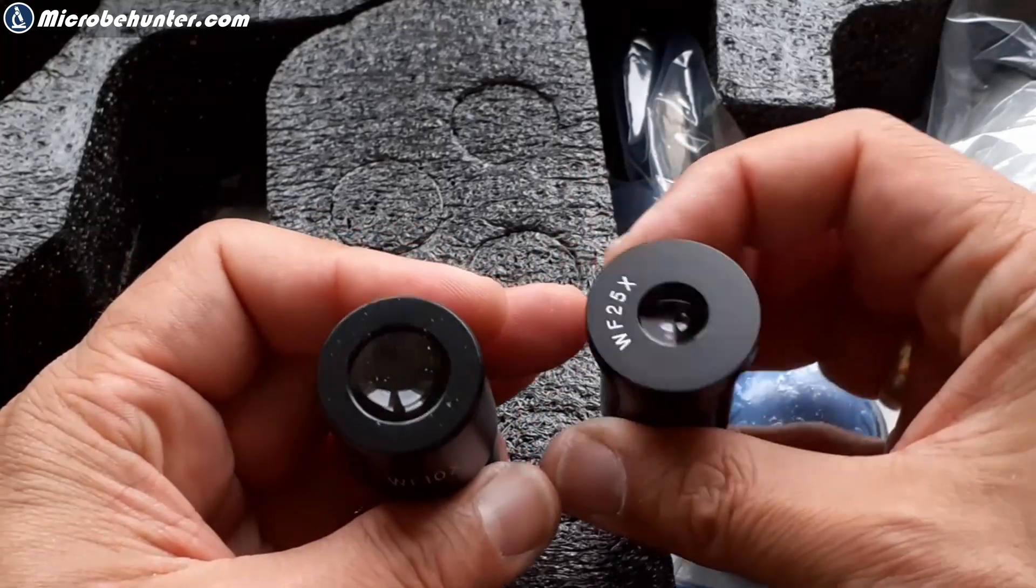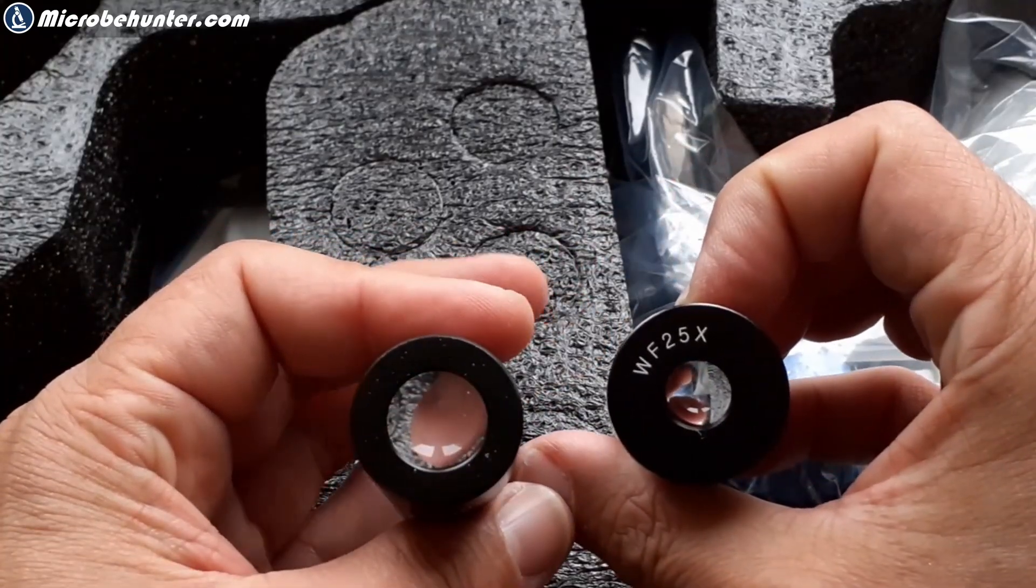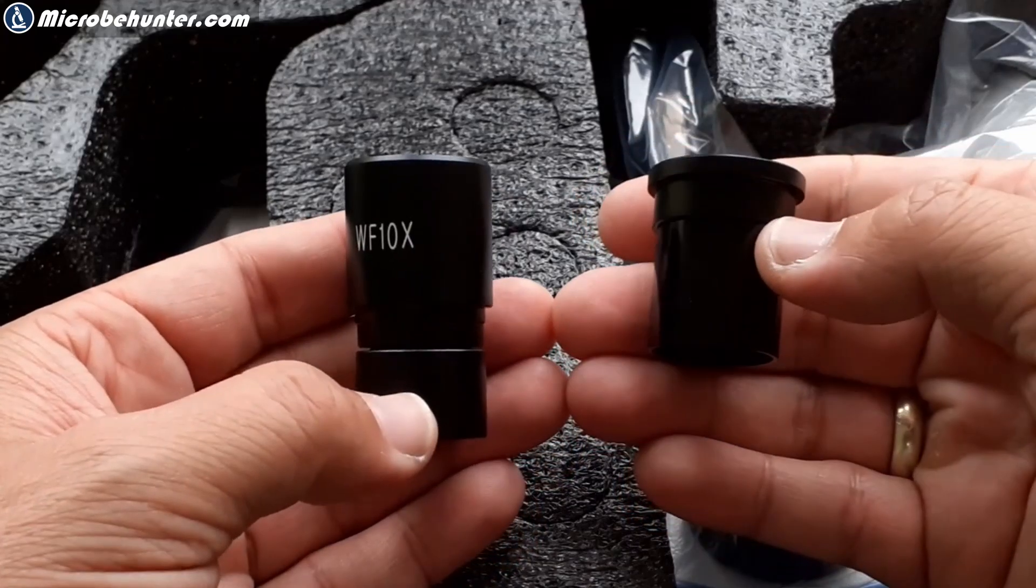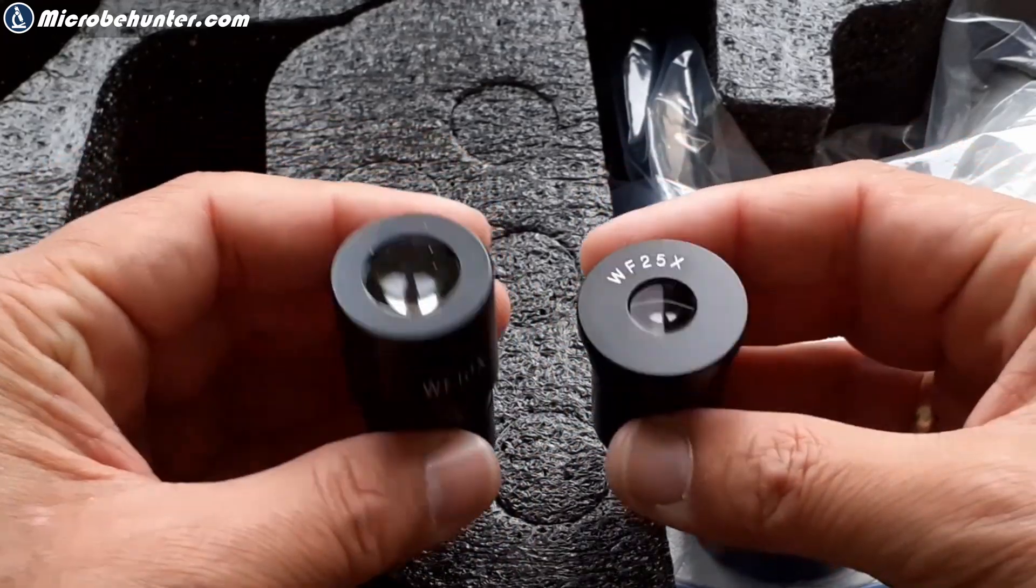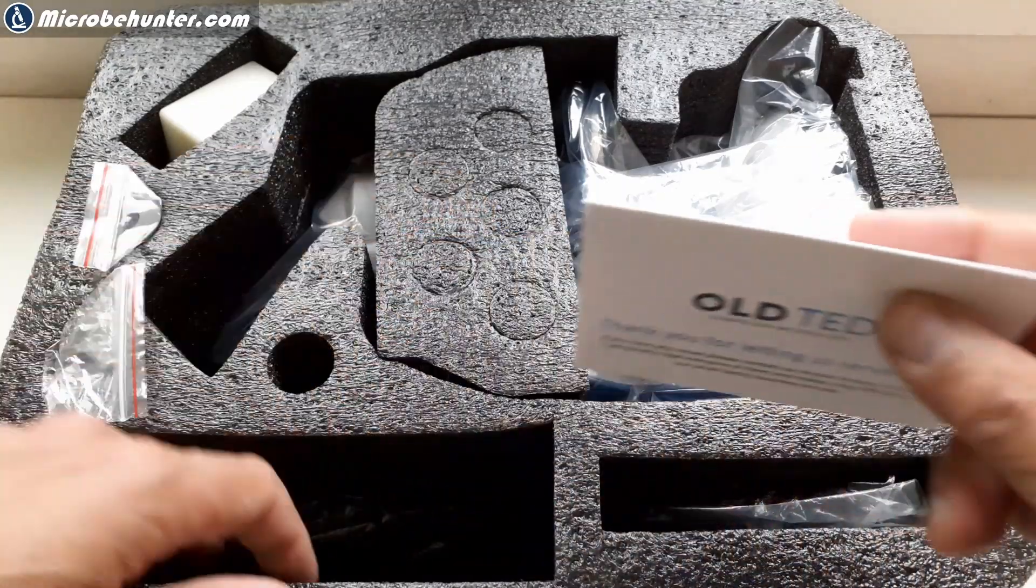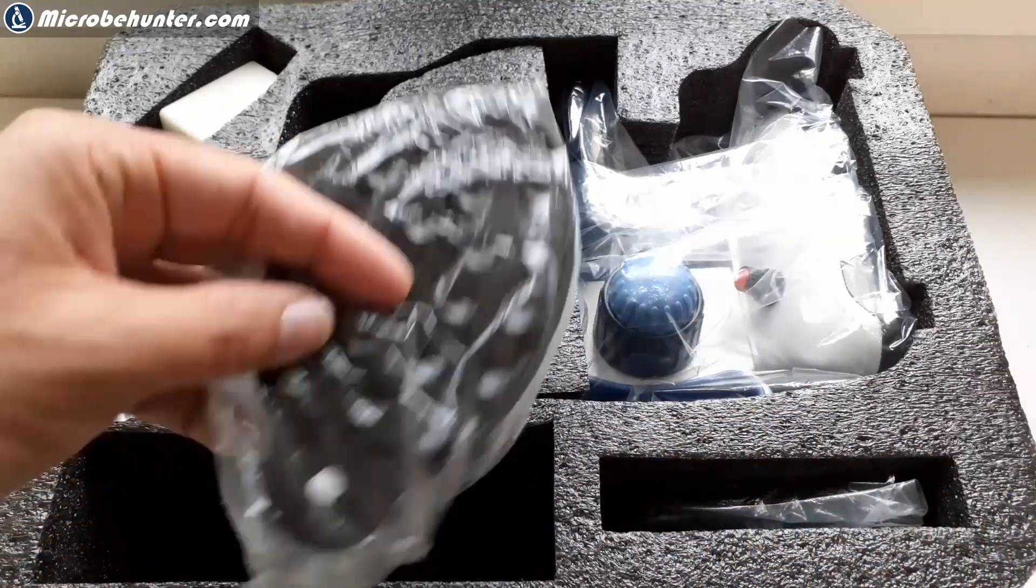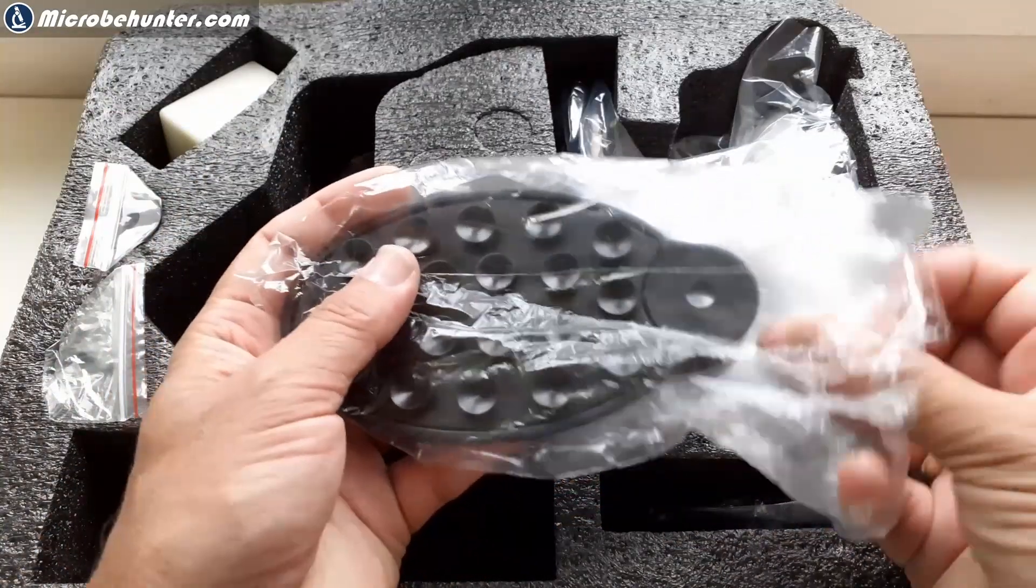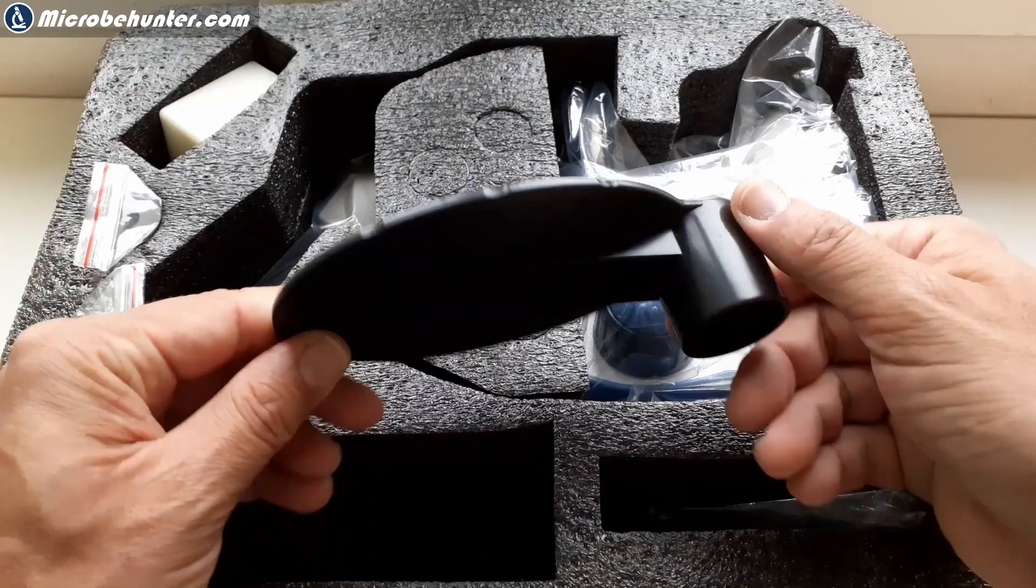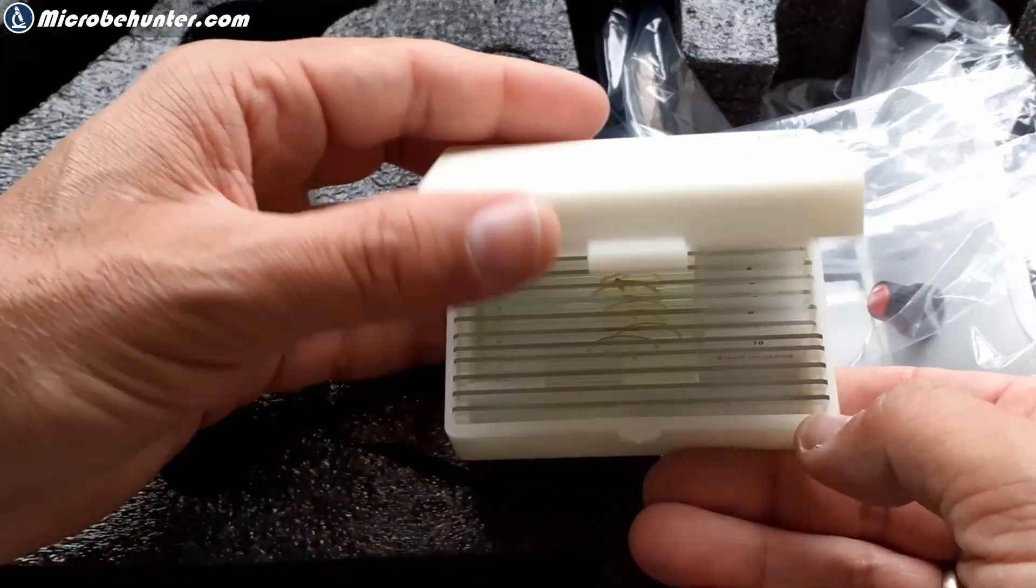There are two eyepieces, a 10x and a 25x eyepiece, which allows you to magnify all the way up to 1000x. I personally think that this is too high. 400x should be the maximum that you need. But it can't hurt. There's some short description, a card here. And this here is a mobile phone adapter. There are suction knobs on it that hold the mobile phone and it can be put directly over the eyepiece to take pictures.